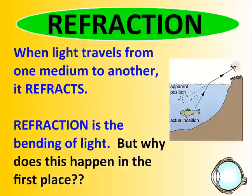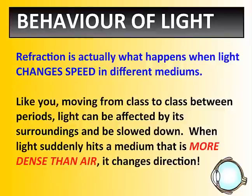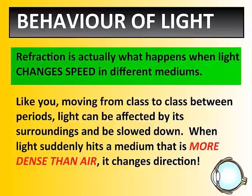Refraction occurs when light travels from one medium to another — it refracts, or bends. This bending of light happens because the density changes. Different mediums have different densities, and different densities refract the light. When we say refraction is happening, we're saying that light is actually changing speed as it travels from one medium to another.